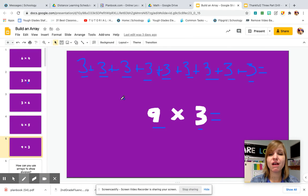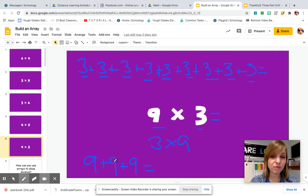Or if I look at this through the lens of commutative property and I flip flop my factor to look like this. Now that shows me three groups of nine. That's a simpler addition equation to add in here.